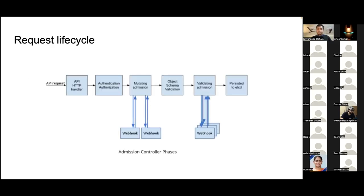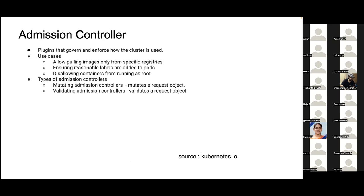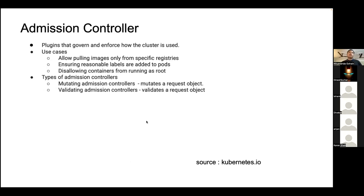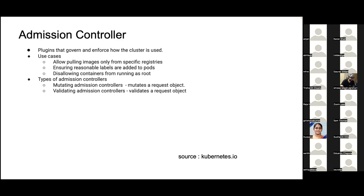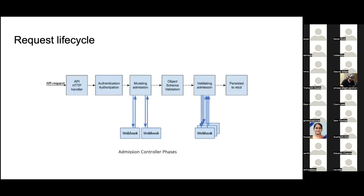A question about Kyverno and OPA — yes, both are examples of admission controllers. OPA in Kubernetes is itself a validating admission controller. Kyverno can also restrict pulling images from Docker Hub or restrict certain image tags — those are all examples of admission controllers.